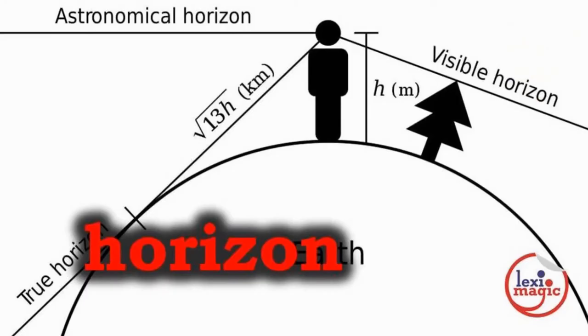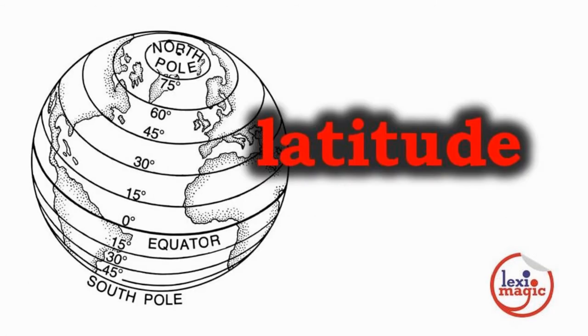Horizon is the boundary where the sky appears to meet the land. Latitude is any parallel circle located on either of the hemispheres of the earth that runs east to west and is parallel to the equator.